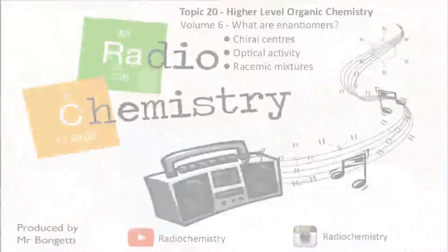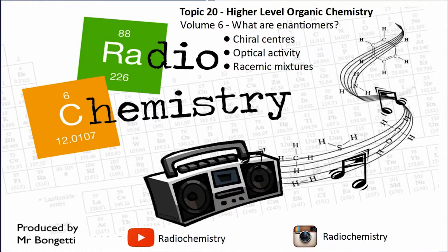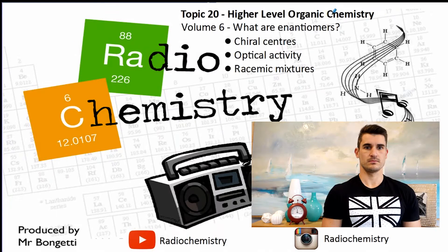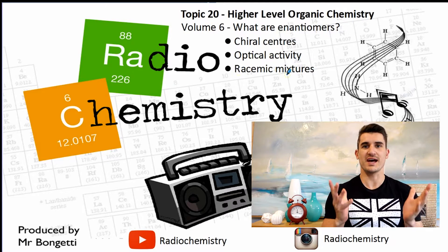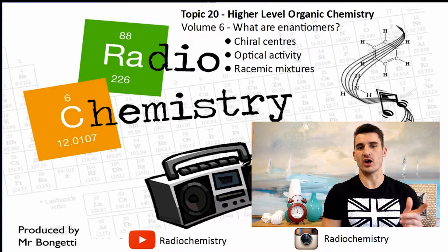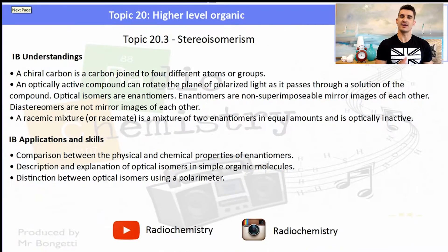Welcome to another video. This is volume 6, the last one of topic 20 organic chemistry, and we look at enantiomers. Topic 20 high-level organic volume 6: what are enantiomers? We look at chiral centers, optical activity, and racemic mixtures in this video.